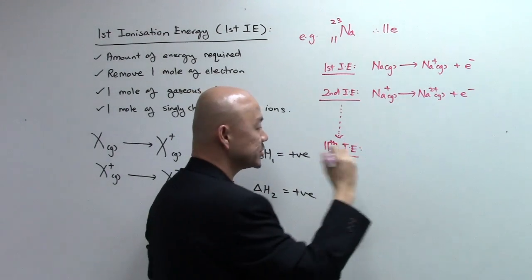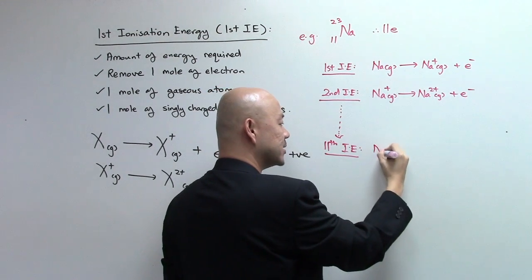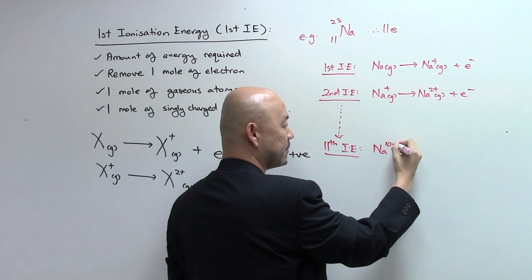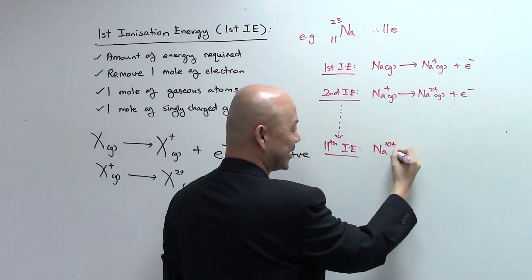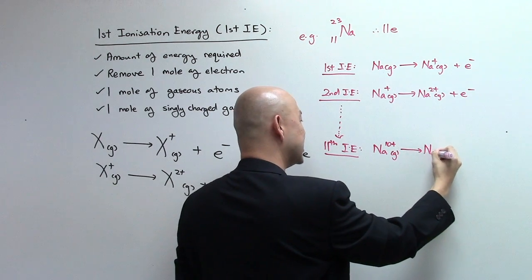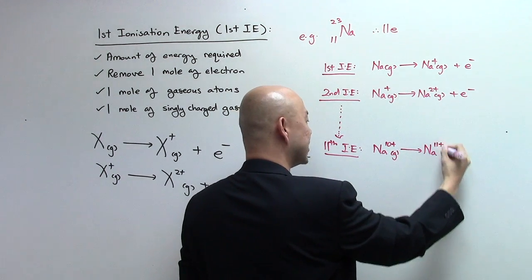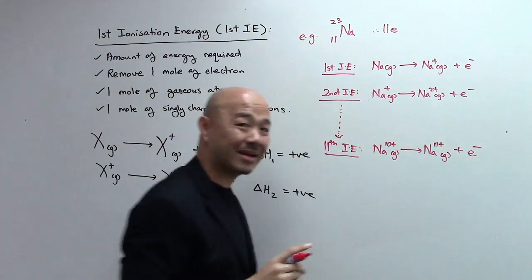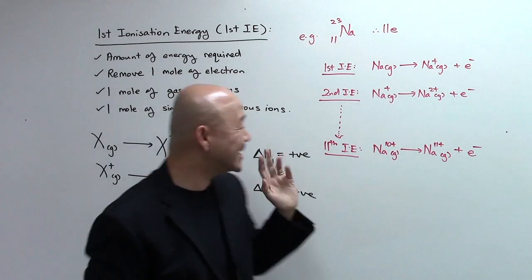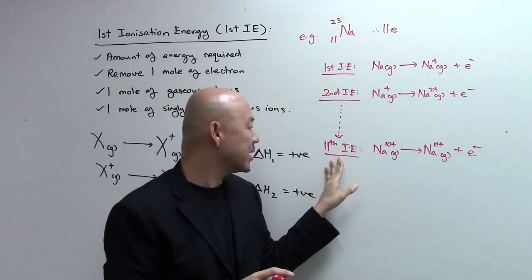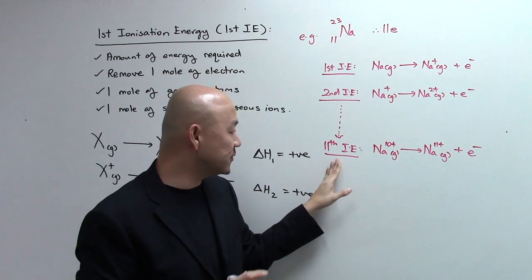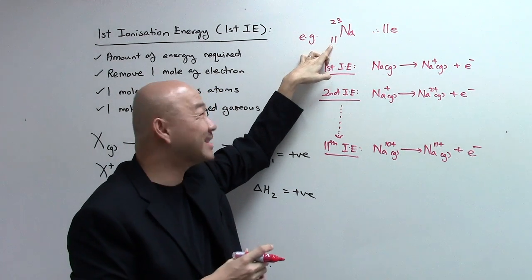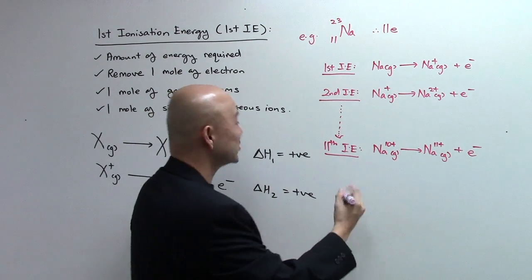So, we can go all the way to a maximum called the 11th IE for sodium. So, what are we going to write? It will then be Na10+ gaseous ion becomes Na11+ gaseous ion, and one mole of electrons. So, basically the maximum IEs you can ever achieve is all based on the proton or the atomic number of that element.